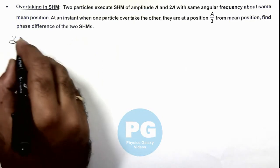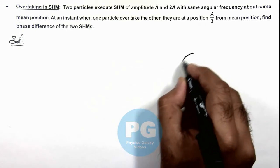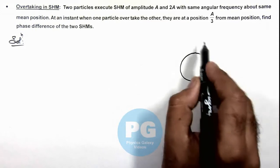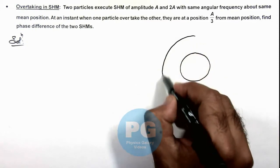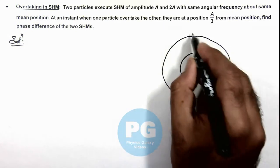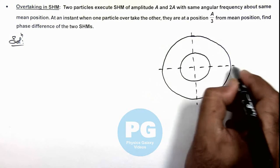To analyze the phase difference we can map both of these SHMs on circular motions. Say this is the circle representing circular motion of amplitude A. This is another circle which is representing SHM of amplitude 2A.